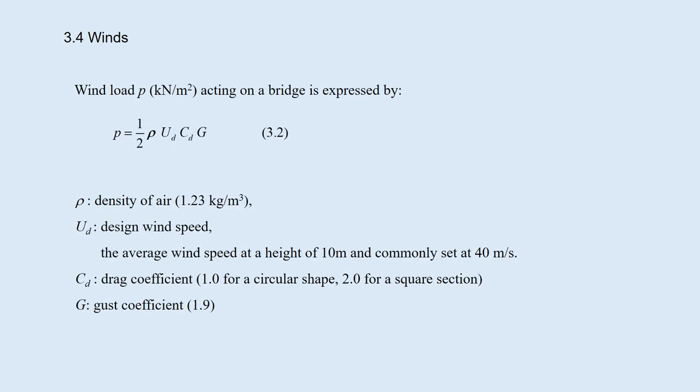3.4 winds. Wind load P acting on a bridge is expressed by this equation. The design wind speed Ud is the average wind speed at a height of 10 meters and commonly set at 40 meters per second. The drag force acts on the body in the direction of the wind stream. It depends on the shape of the body. For example, a drag coefficient for a circular shape is 1.0 and that for a square section, 2.0. GUST is a dynamic effect of fluctuating wind speed and commonly set at 1.9.